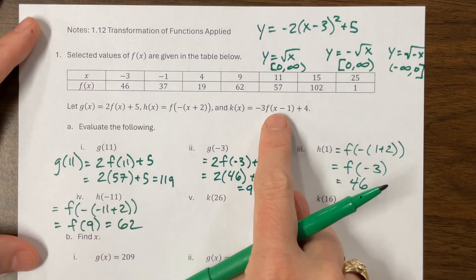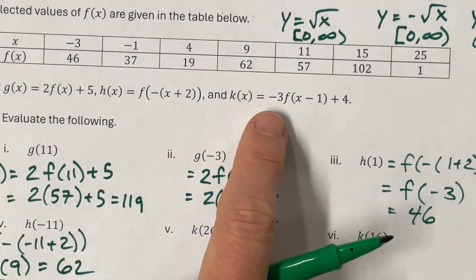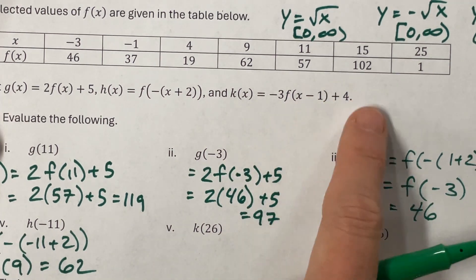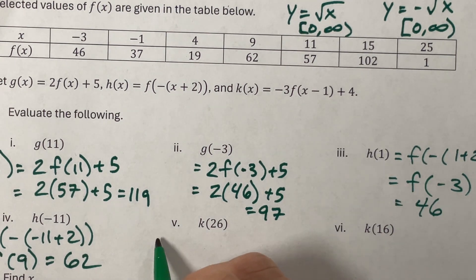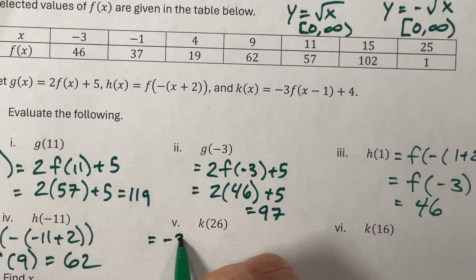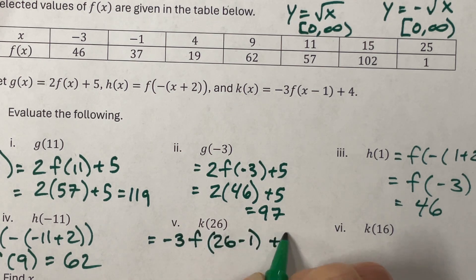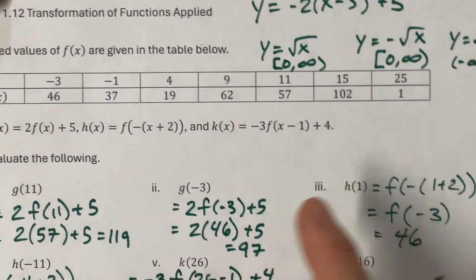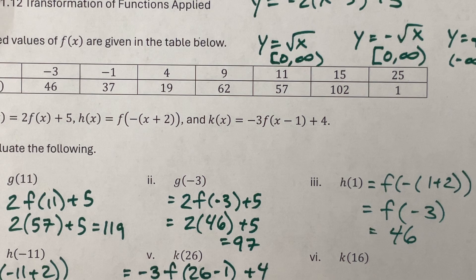K is the new function, and there's more things happening here. So this one would have a reflection over the x-axis. We would have a vertical dilation by a factor of 3. We're shifting it to the right 1 and then up 4. So K of 26 would be equal to negative 3 times F of 26 minus 1 plus 4. 26 minus 1 is 25. And F of 25 was equal to 1. Oh, that was nice. So I have a negative 3 times 1 plus 4. Negative 3 plus 4 is equal to positive 1.